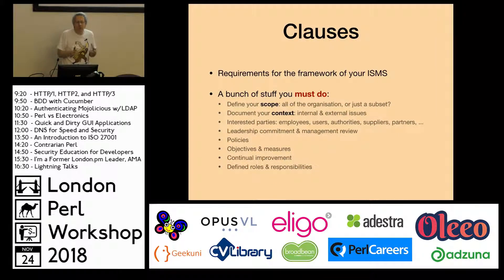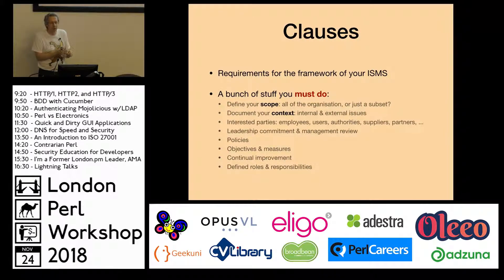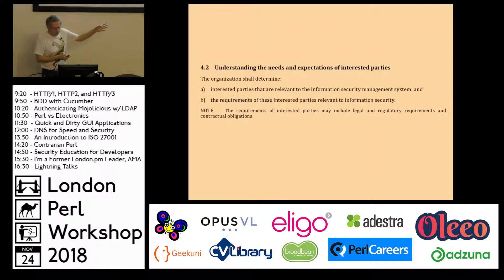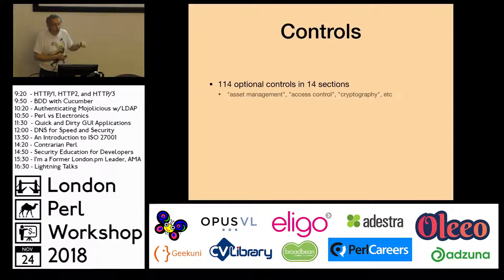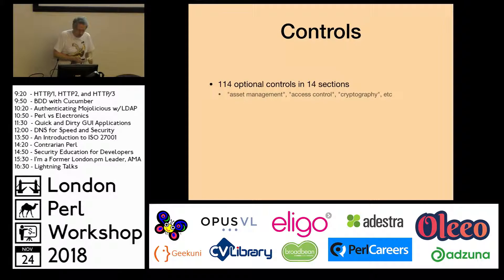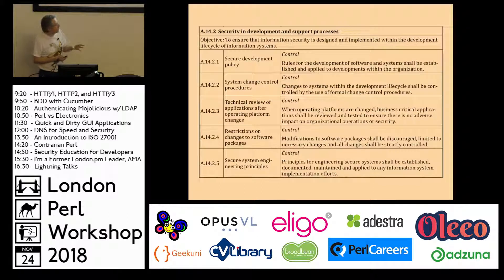The clauses define a whole bunch of stuff you've got to do. You've got to define the context that your company is working in, identify which part of your company this 27001 system applies to, and a number of other things. This is an example clause from the standard — I can't show you the whole standard because of copyright issues. For controls, there are 114 of them in 14 sections.